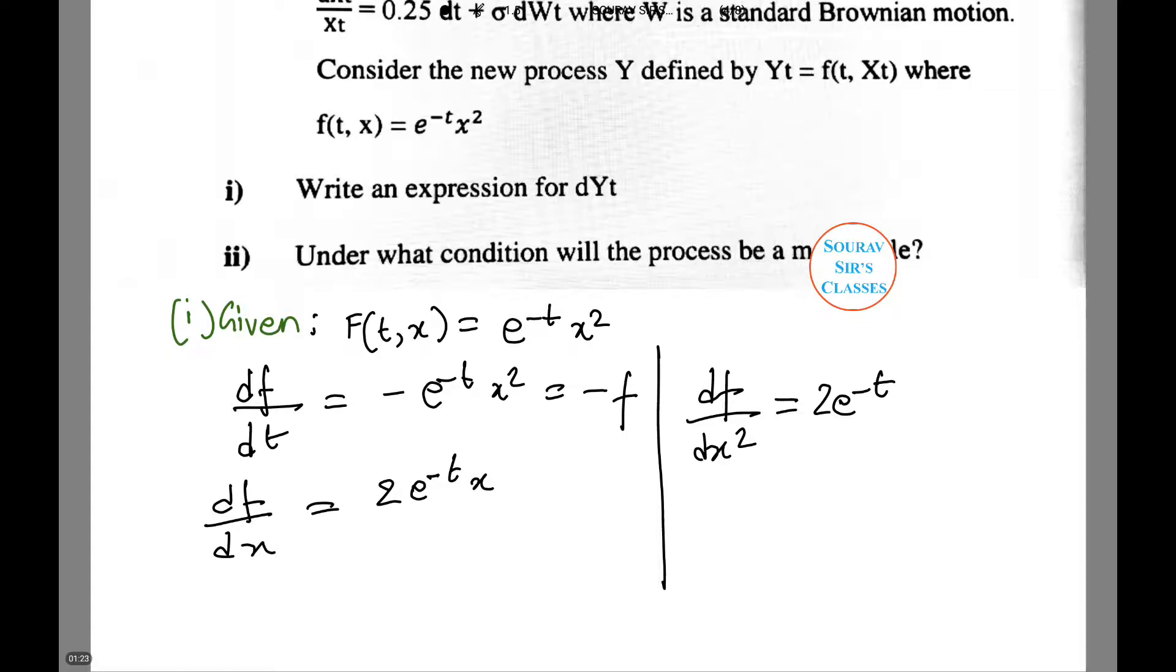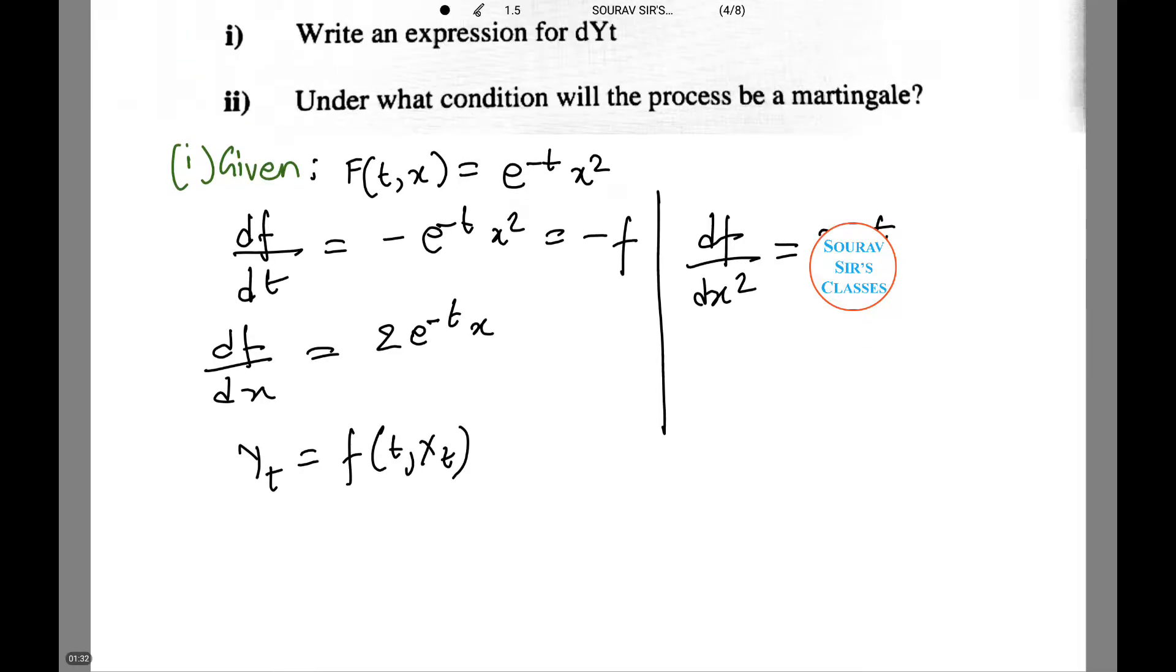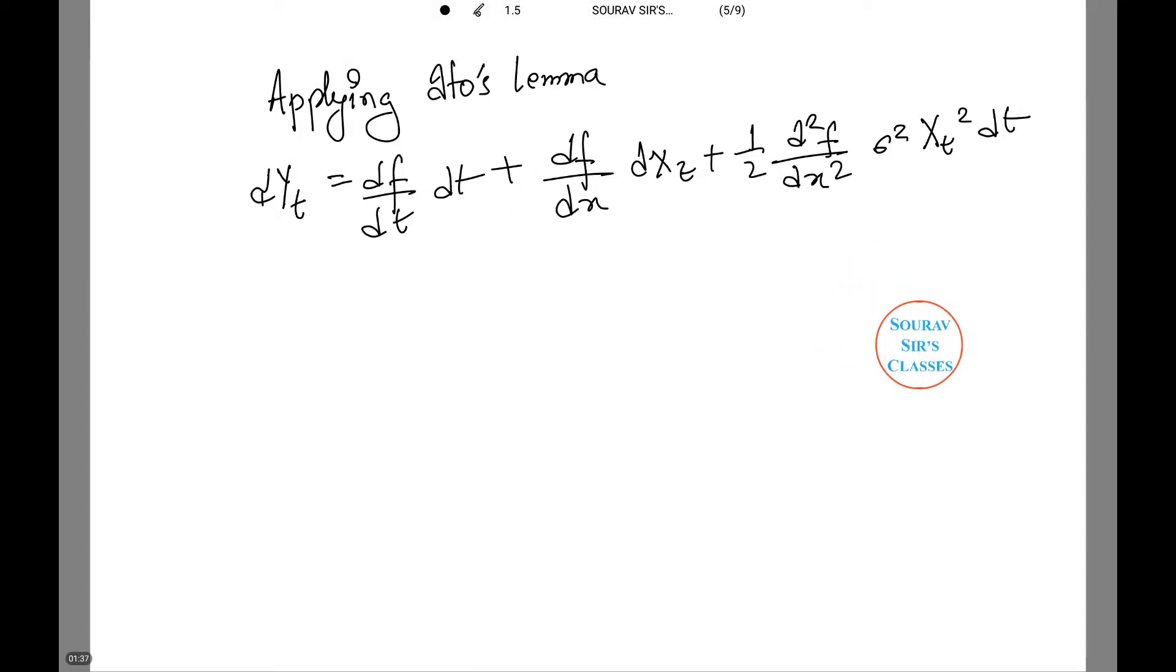Therefore Yt equals f(t, Xt). Therefore applying Ito's lemma we have: Now simplifying it further we put in the values minus f dt plus 2 e to the power minus t times Xt dXt plus e to the power minus t sigma squared Xt squared dt.